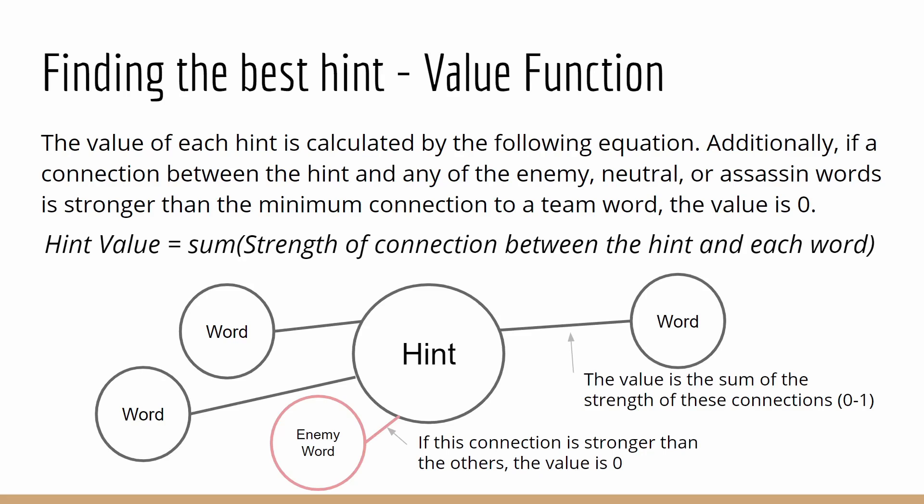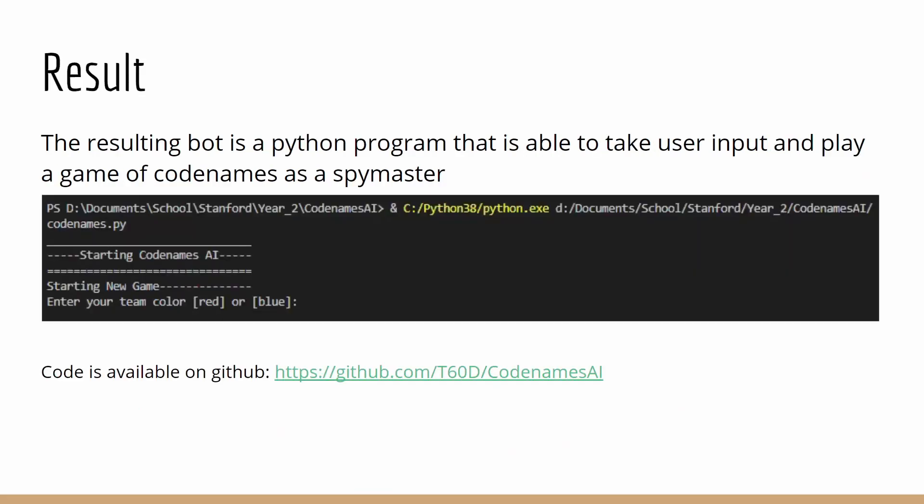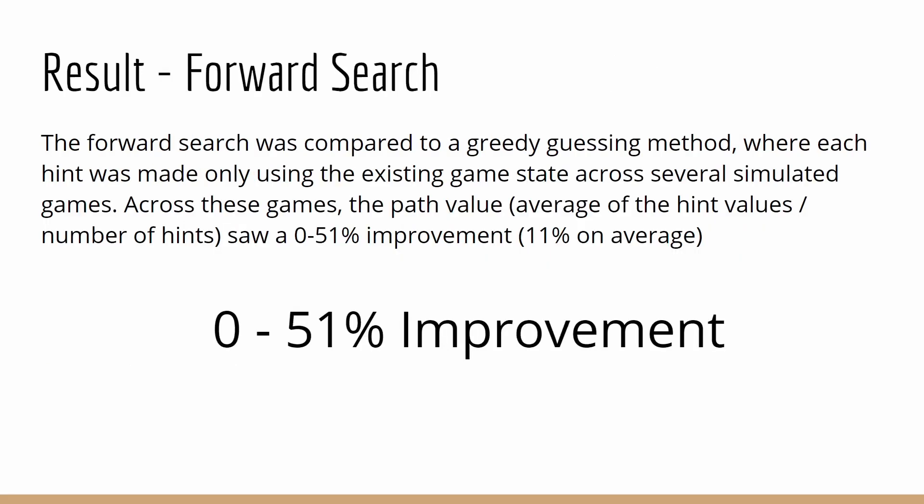The result of this is a Python program that is able to take user input and play a game of Codenames as a spymaster. The forward search was compared to a greedy guessing method, and using the forward search I saw a zero to 51% improvement, or 11% on average improvement in the path value, which is the average of the hint values over the number of hints, showing that the forward search is an effective method for improving the accuracy and performance of the bot.